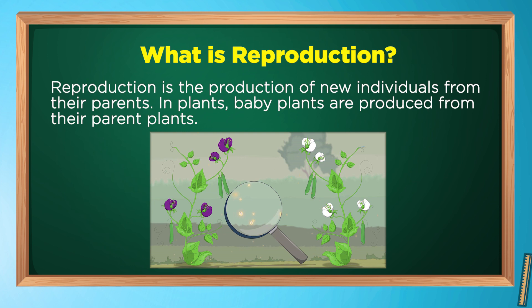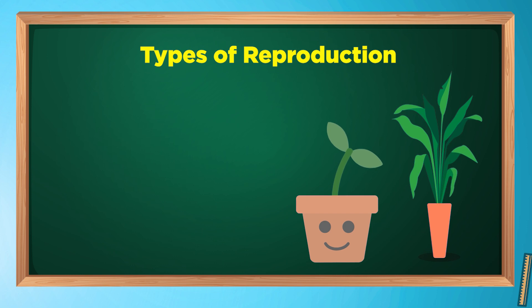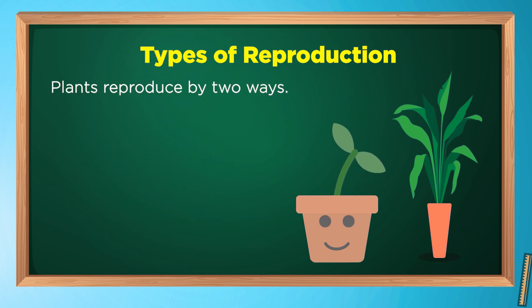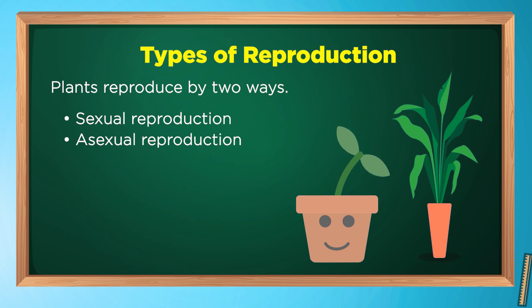There are two types of reproduction. Plants reproduce by two ways: sexual reproduction and asexual reproduction. In asexual reproduction, new plants are produced without the help of seeds. In sexual reproduction, new plants are produced with the help of seeds.